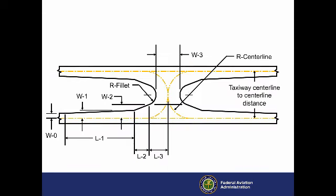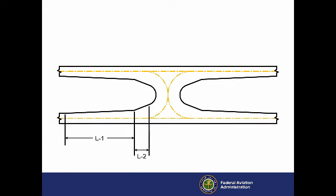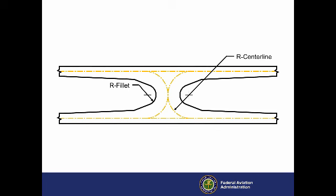We have also designed parallel taxiways with crossover taxiways for typical combinations of ADG and TDG. We use the dimensions shown on this diagram to define configurations controlled by TDG. Lengths L1 and L2 are the same as in a typical curve. In this special case, L3 is the distance along the centerline from the end of the second taper to the center of the crossover taxiway. The two radii, R-centerline and R-fillet, are once again similar to a typical curve. We also use four widths. The first three, W0,